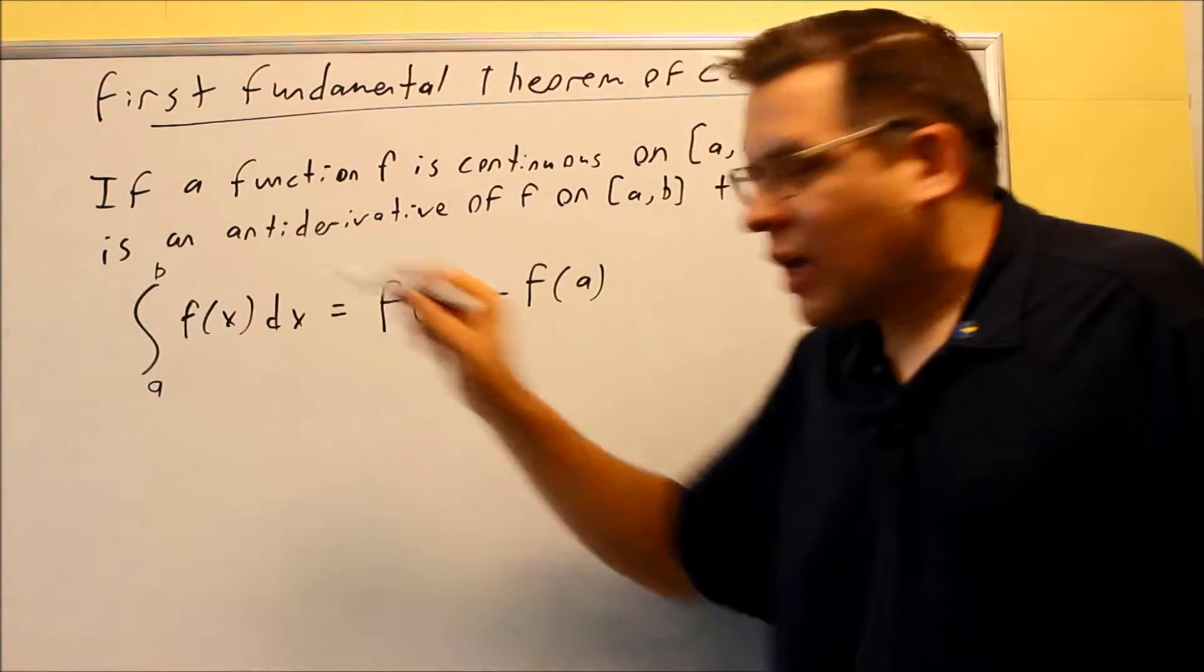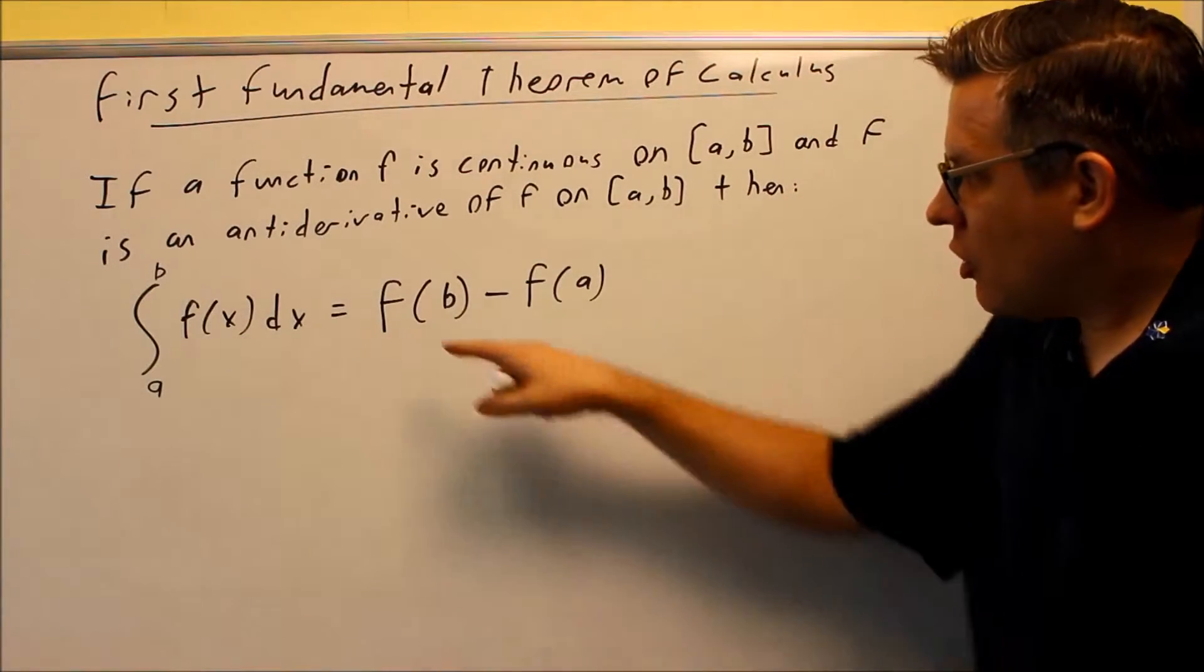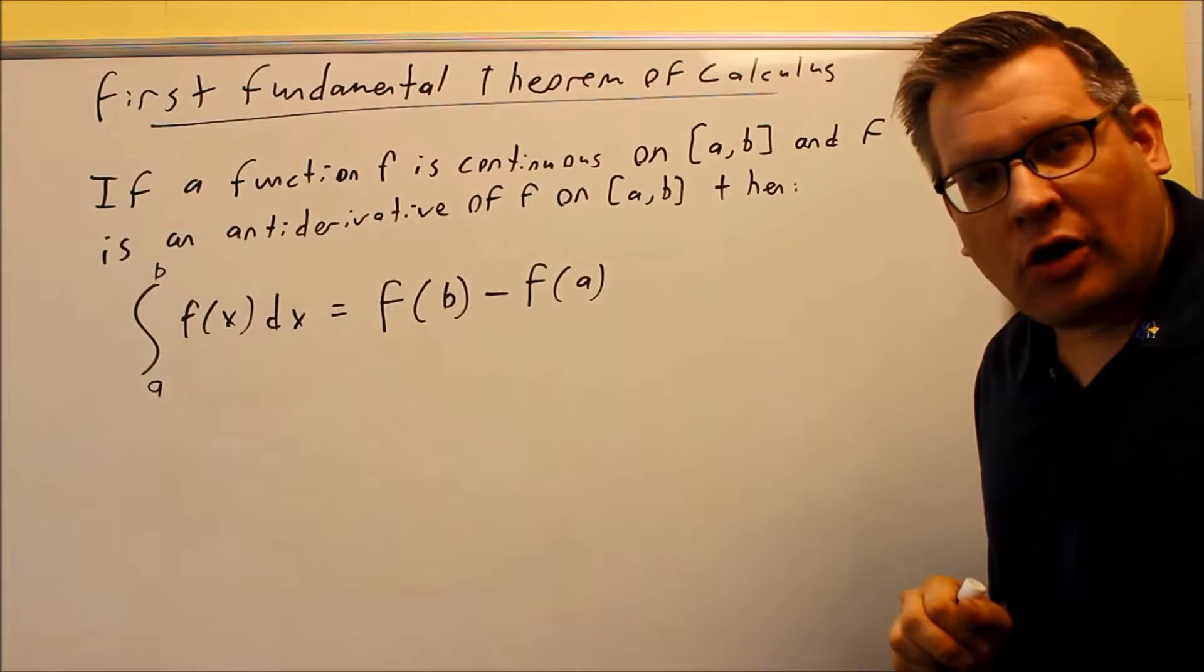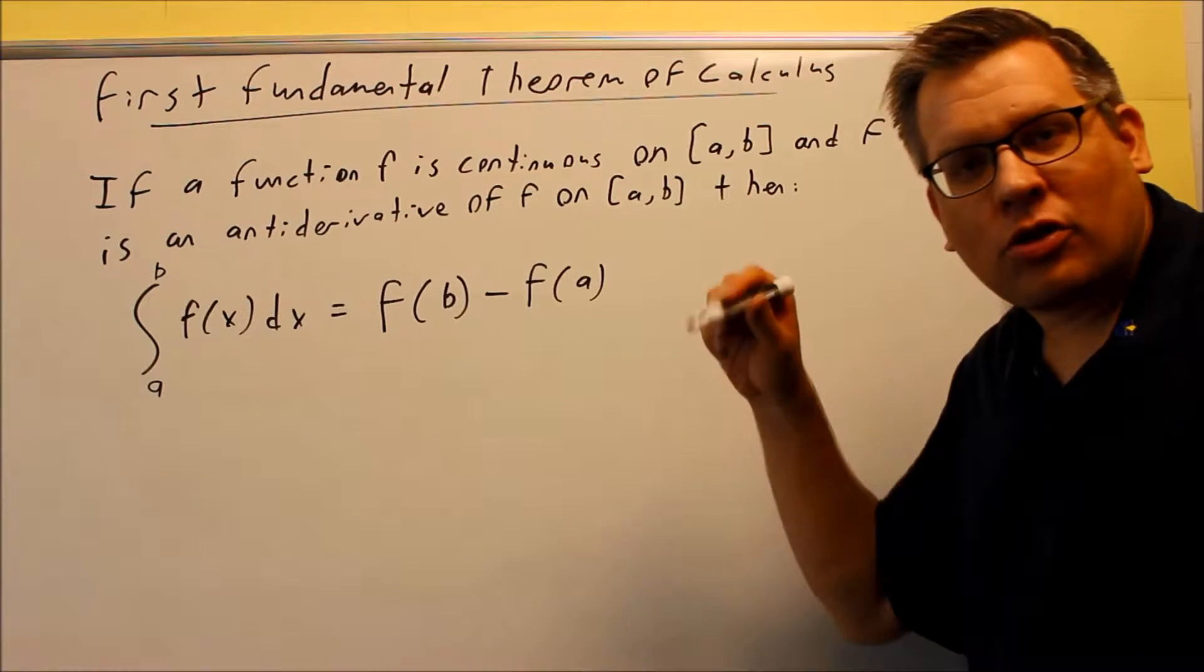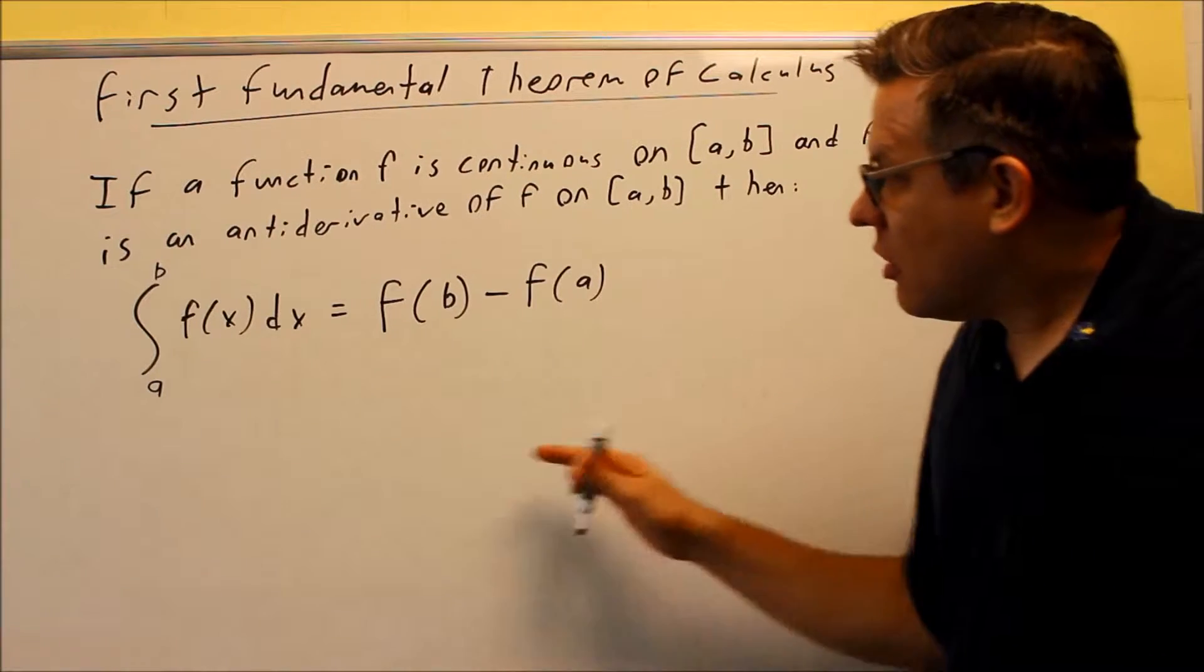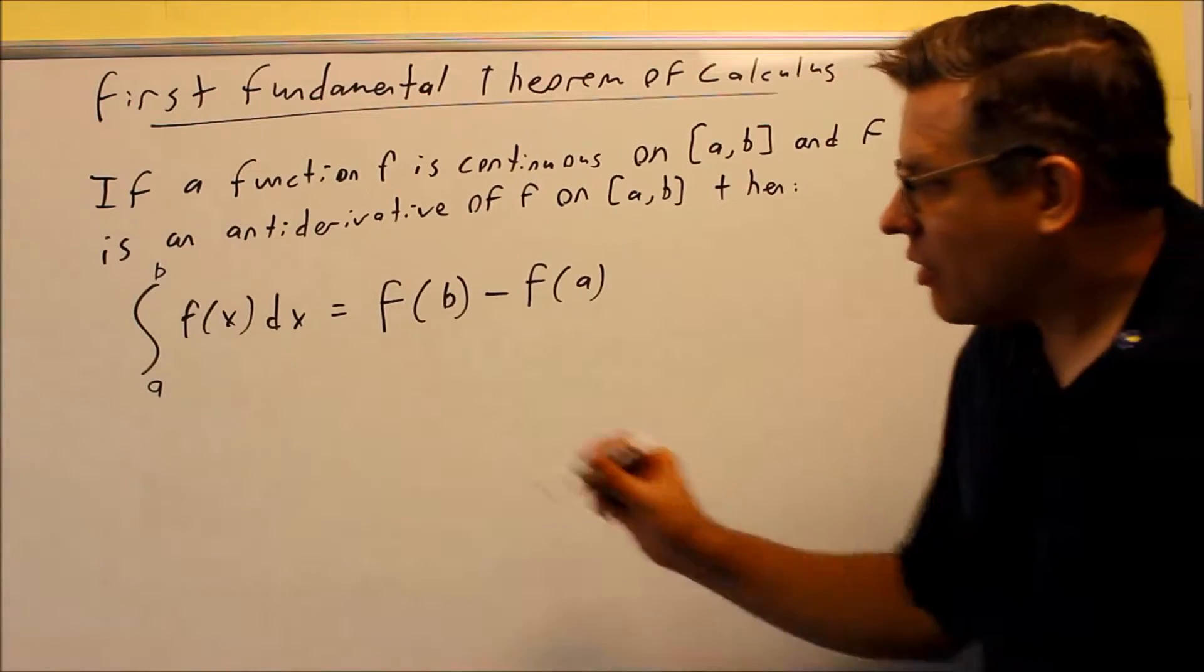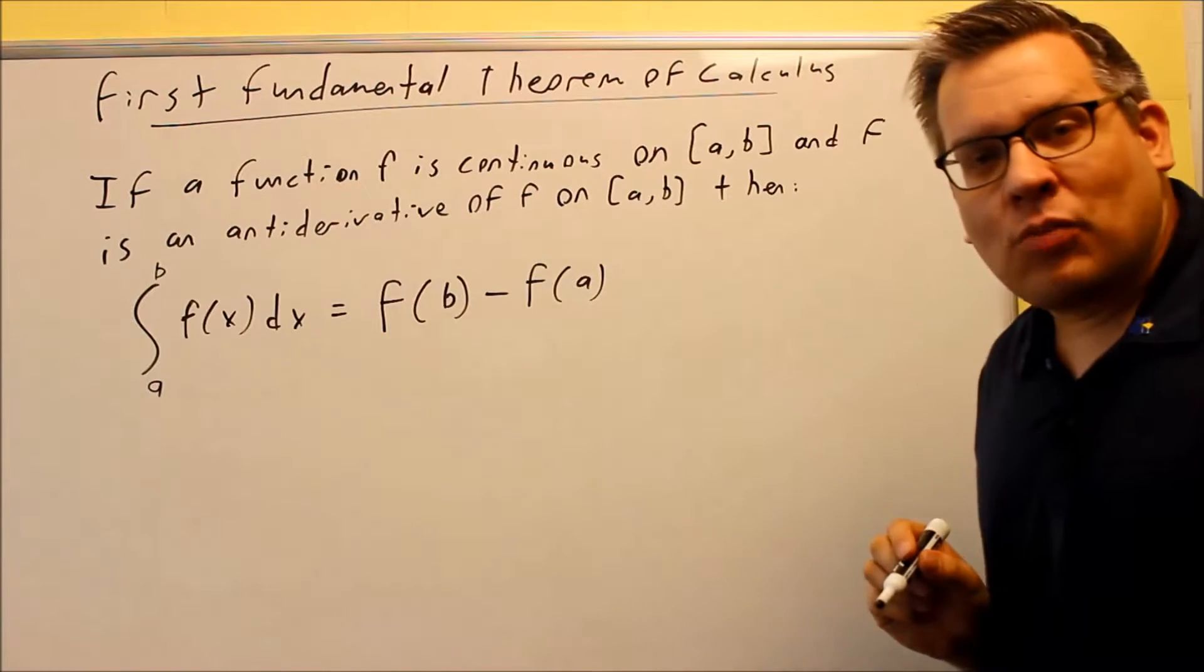If we have these numbers added here, then once you take the antiderivative, you're going to plug in the top number and then subtract the bottom number, and you're actually going to get a numerical answer. Now all the ones we've done so far with antiderivatives, we had to put the plus c on the end. Now these kind of problems, we're not going to have a plus c because we actually have numbers to put in to get the exact answer. Essentially what you're doing is finding the area underneath this curve f(x) between a and b.